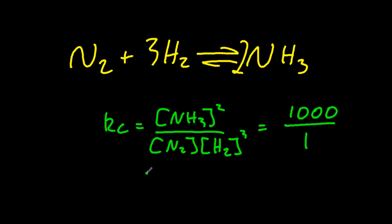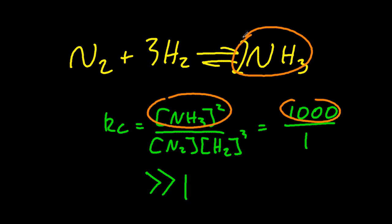So a thousand is a big number, and bigger than one is how it's put in the syllabus. So that means there's lots of ammonia. So essentially the products are heavily favoured.